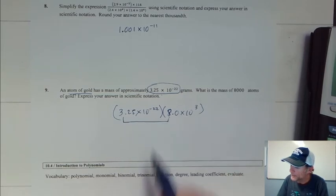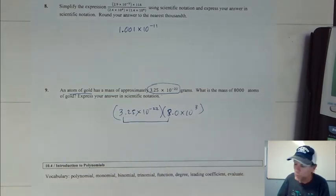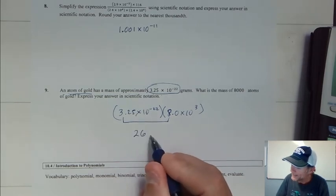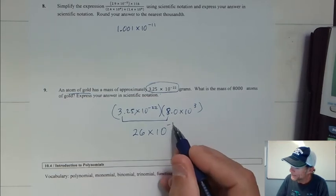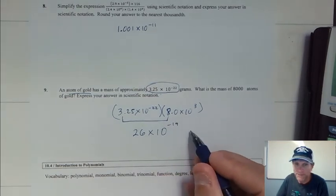So that's how it would look if we were doing it in scientific notation. If I work through this in scientific notation, I multiply those front numbers together, and I get 26 times 10 to the negative 19th.